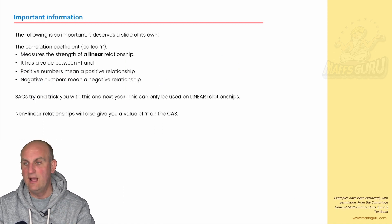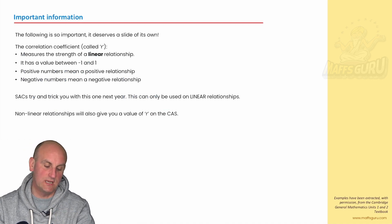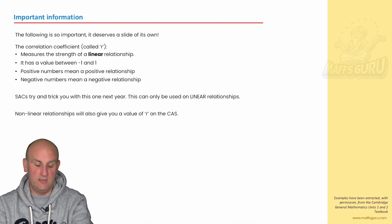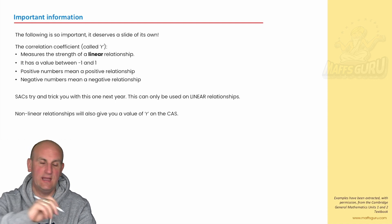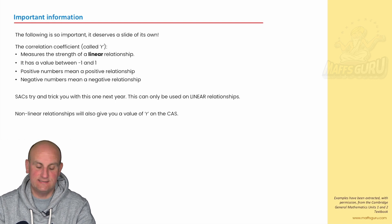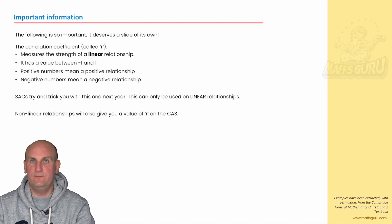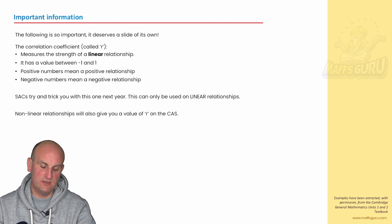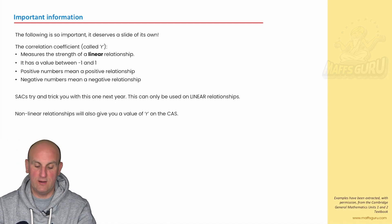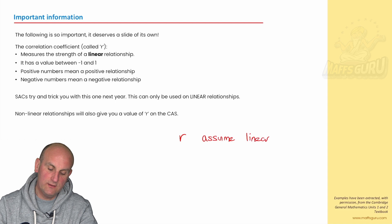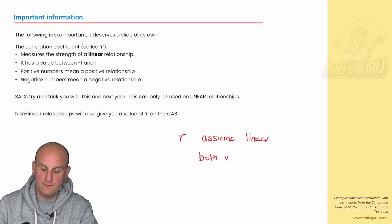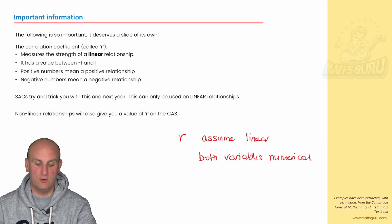There are some buts here, and this information couldn't be more important. Put it in your summary book. One, it measures the strength of a linear relationship. If we have a curve, we cannot use R. It doesn't make any sense. R is for linear. It has a value between negative one and one. Positive numbers mean it's a positive relationship. Negative numbers mean it's a negative relationship. R assumes, by using the letter R, you are assuming that the data is linear. That's important. And you are assuming that both variables are numerical. That comes in again a little bit later on in the course. This is all important information.